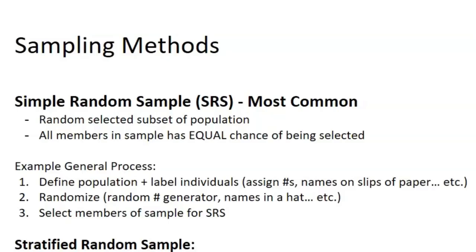The most common one you're going to see is Simple Random Sample, or SRS. It's a randomly selected subset of the population, and all members in the sample have an equal chance of being selected. The general process starts with defining the population and labeling the individual — so what that looks like in practice is assigning numbers to people or putting their names on a slip of paper.